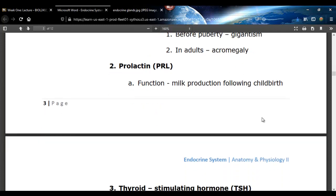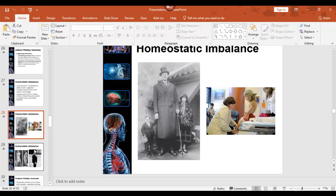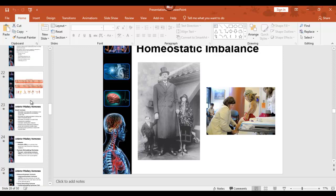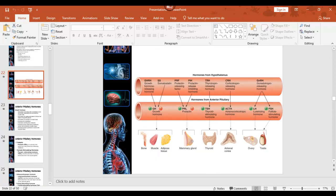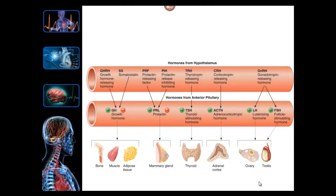Prolactin causes milk production following childbirth. Looking at this slide — we're not doing the hypothalamic hormones. Here's growth hormone affecting bone, muscle, and fat — it's a fat metabolic hormone. Here's prolactin, which causes milk production following childbirth.